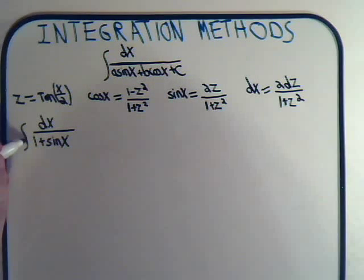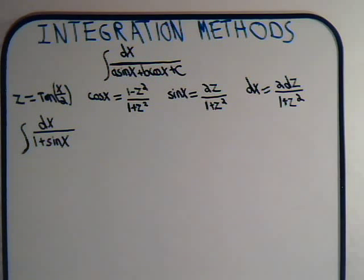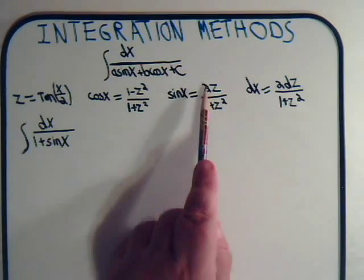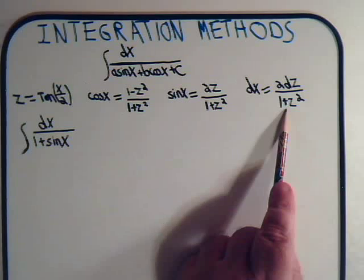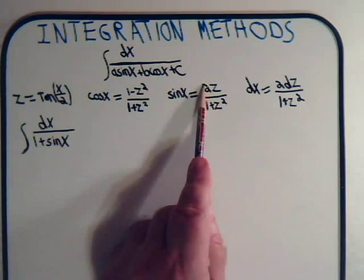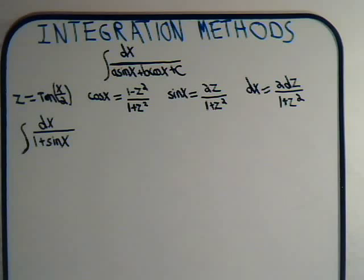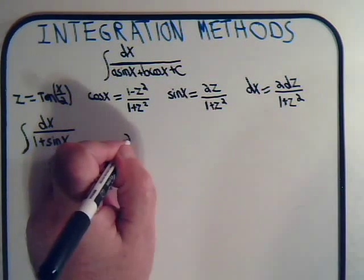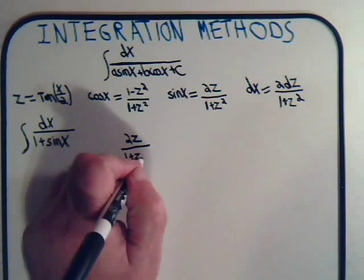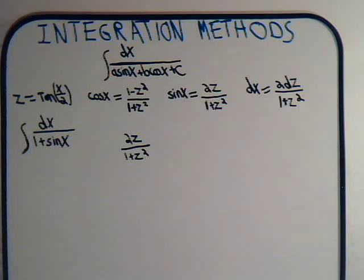As you can see this is a simple looking integral, but there's no way we can integrate that right now with our current arsenal of techniques. So we proceed and we say z is going to equal the tangent of x over 2. So the sine of x is going to become this expression, and dx is going to become this expression. So let's look at the denominator — we've got 1 plus the sine of x, so we have 2z divided by 1 plus z squared.